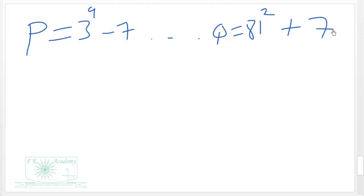So we can express all to a base of 3. Okay, so already this is in a base of 3. So we have 3 exponent 9 minus 7.